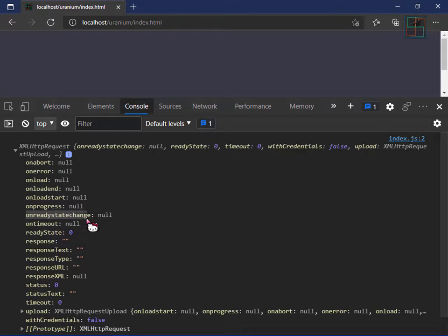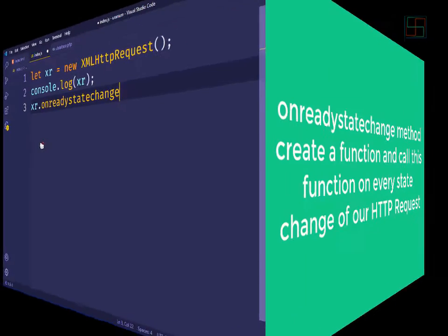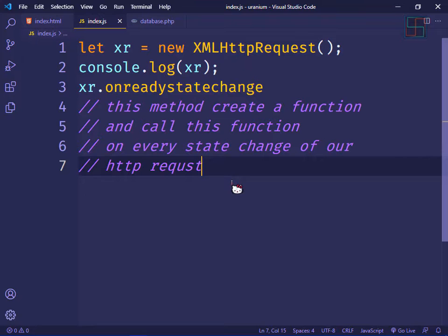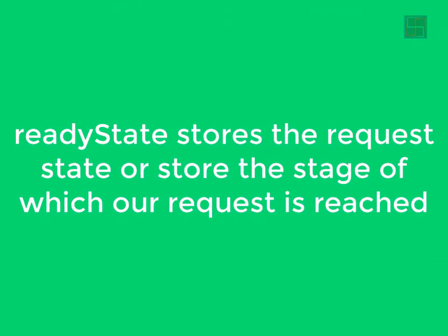One method is onreadystatechange. xr.onreadystatechange creates a function and calls that function on every state change of our HTTP request. Another method is xr.readyState, which stores the current state of our HTTP request.